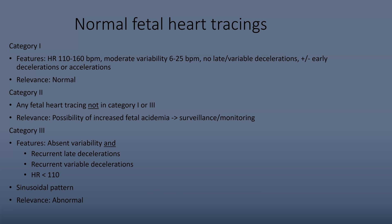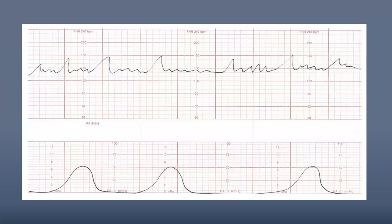It's important to know these categories so you can generally tell if you're looking at a normal, almost abnormal, or totally abnormal tracing. Looking at a tracing: at the top you have the fetal heart rate, and at the bottom you have uterine contractions. If you think of each big box as approximately one minute, you can guesstimate what's going on by characterizing these over time.